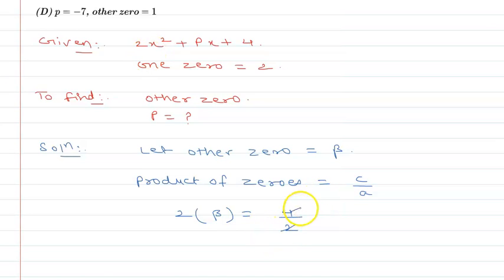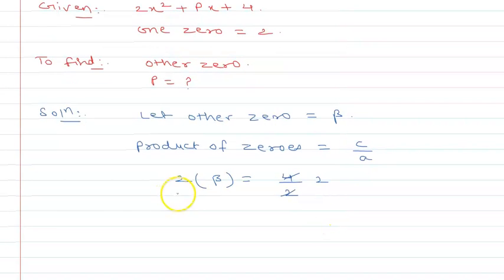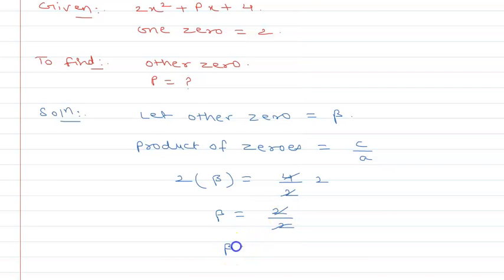Okay. So this cancels to 2. So beta will be equal to 2/2, that is 1. So beta is 1.